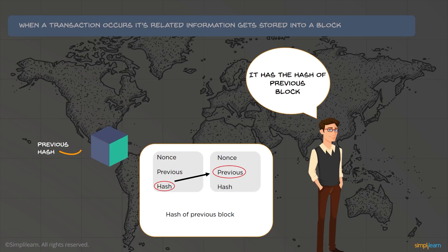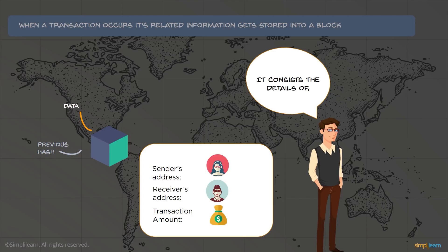Previous hash is the attribute which connects a block to its previous block, so it consists of the hash value of the prior block. Data consists of the details of the sender's address, the receiver's address, and the transaction amount. There could be multiple transactions amongst multiple senders and receivers, so each block will consist of n number of transactions, each with a sender's address, a receiver's address, and a transaction amount.